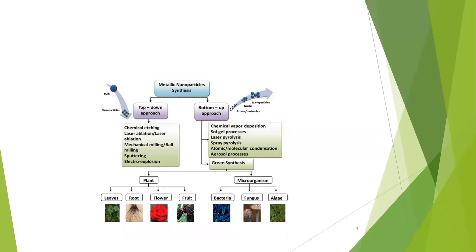There are three methods for the synthesis of nanomaterials: one is the physical method, the second one is the chemical method, and the third one is the biological method. By using physical, chemical, and biological methods, we can synthesize nanomaterials.